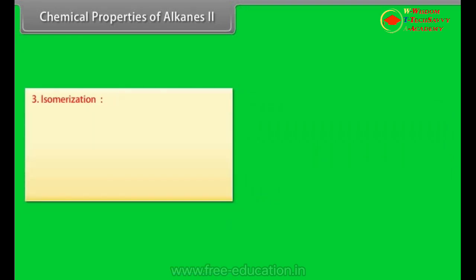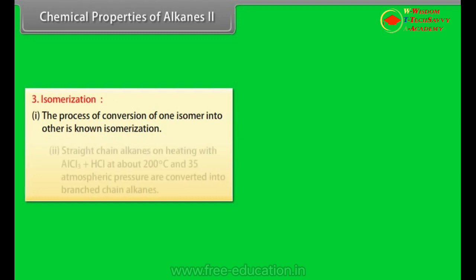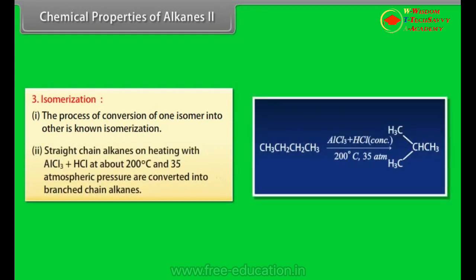Isomerization: Number 1: The process of conversion of one isomer into other is known as isomerization. Number 2: Straight chain alkanes are heating with AlCl3 plus HCl at about 200 degrees Celsius and 35 atmospheric pressure are converted into branched chain alkanes.